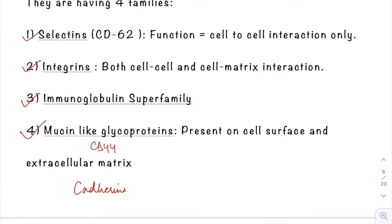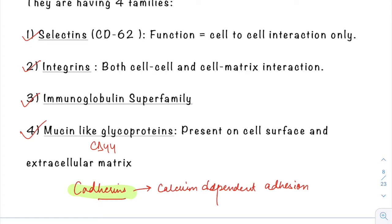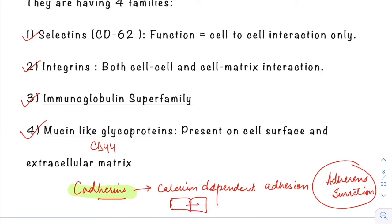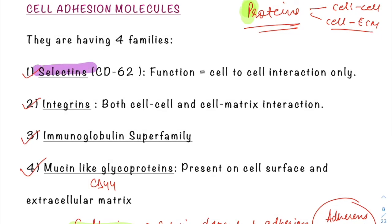Cadherins — named from calcium-dependent adhesion molecules — are important in the formation of adherence junctions, helping in cell-to-cell contact and providing stability to cells, mainly found in the dermis. Because they have no role in leukocyte adhesion and migration, I won't be discussing them here. I will only be discussing selectins, integrins, the immunoglobulin superfamily, and mucin-like glycoproteins (the CD44 family).